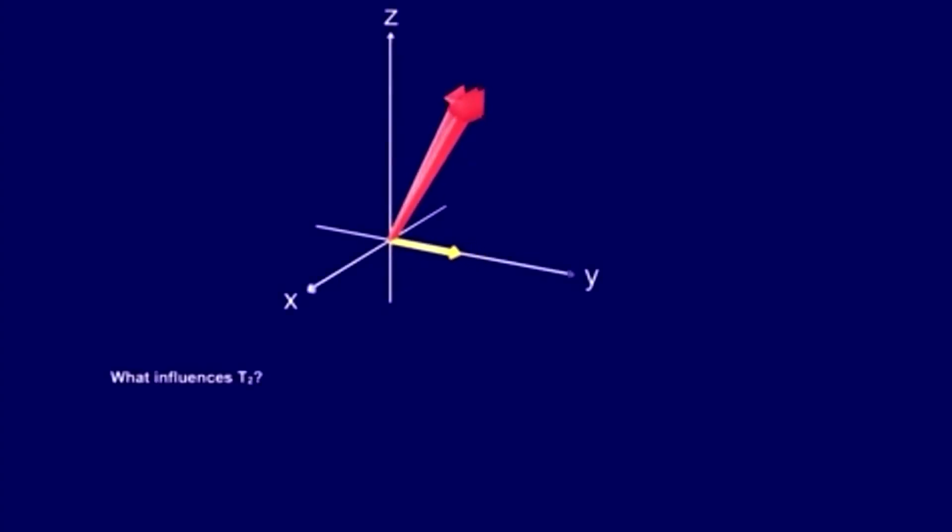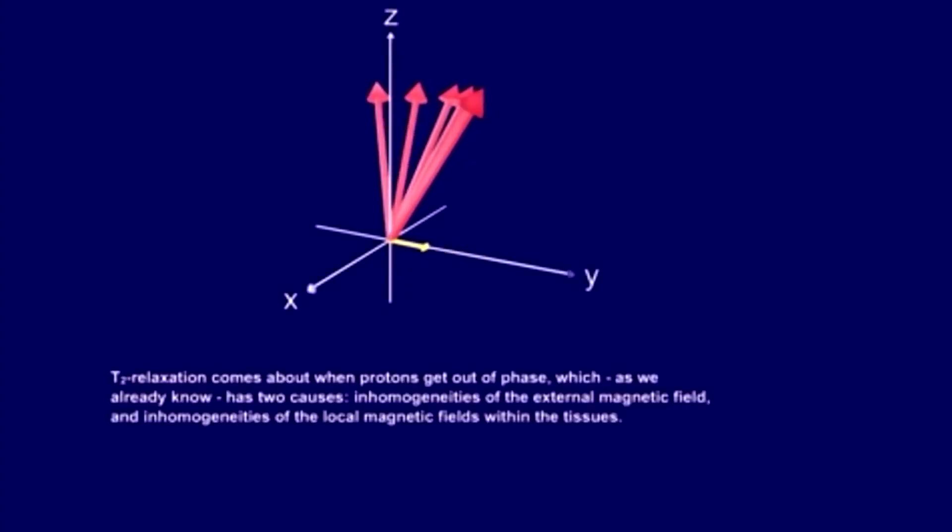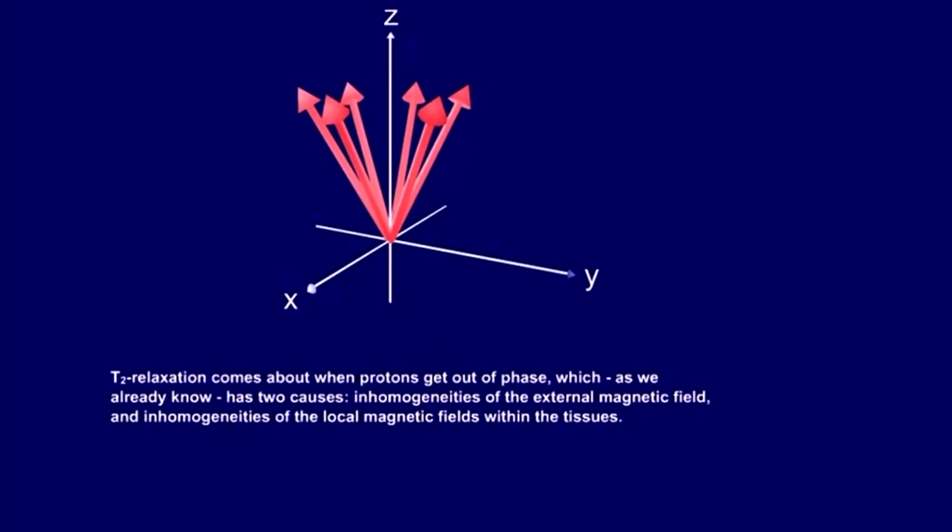What influences T2? T2 relaxation comes about when protons get out of phase, which, as we already know, has two causes.